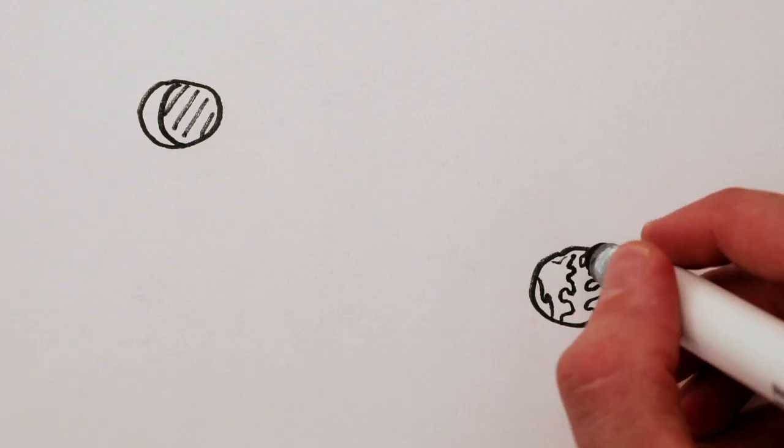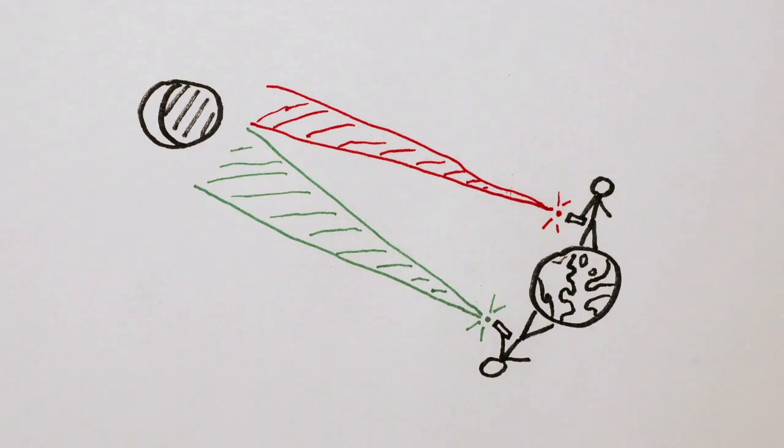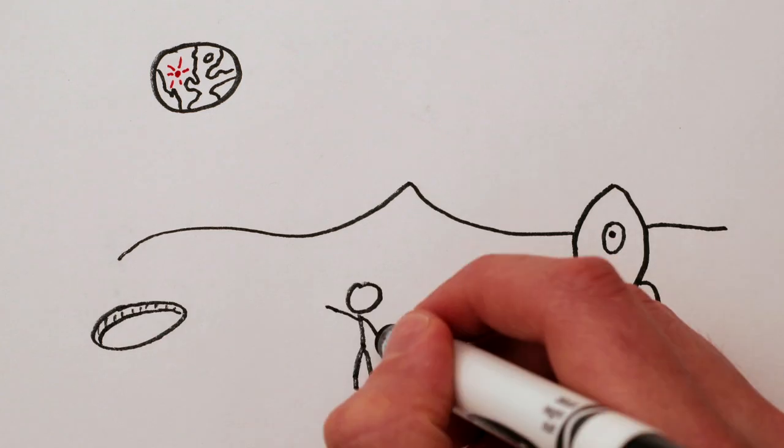And as you may have guessed, the red dot of a laser pointer is pretty big by the time it gets to the moon. Depending on your laser, it might be 500 or 1000 kilometers across, so don't worry about blinding any astronauts.